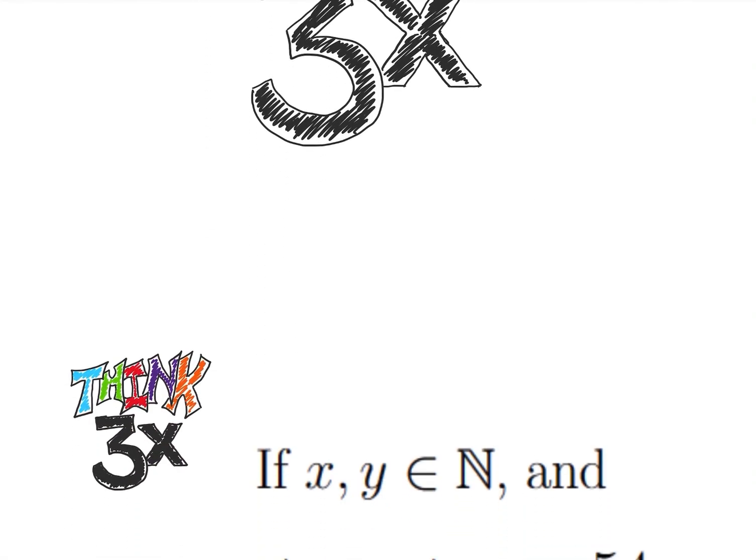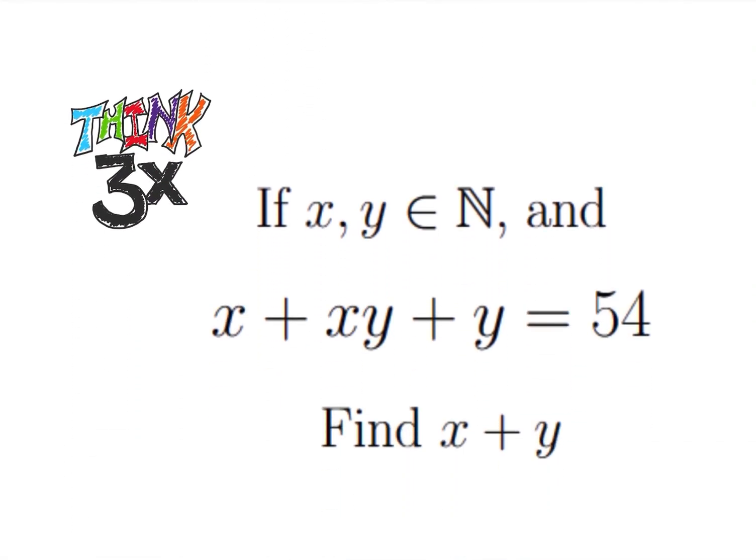Welcome back to Think Thrice Problem Solving. Today we're going to be solving a pretty nice, easy algebra problem. So we have x, y are in the natural numbers, so integers greater than 0. We have x plus xy plus y is equal to 54, and we want to find x plus y.